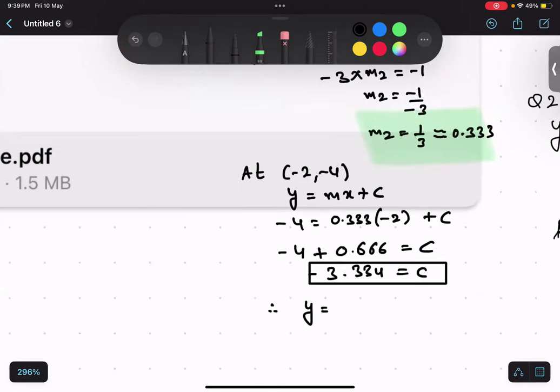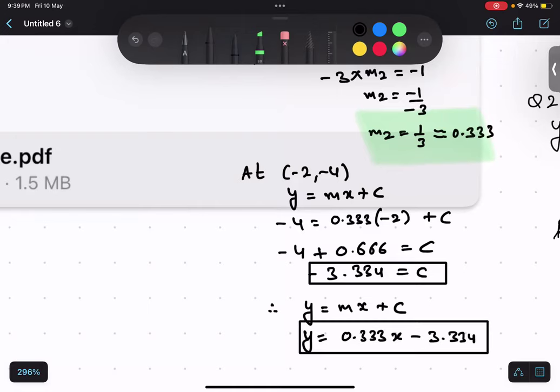So, therefore, y equals to mx plus c. This is my final step for the answer. m value is, what is the m2 value? 0.333x, c value is 3.334. Is this thing clear? Yes, I got the same thing. So, this is my final equation. But I will explain you how can you convert this thing into fraction form also. So, that is it regarding the perpendicular line. Thank you.